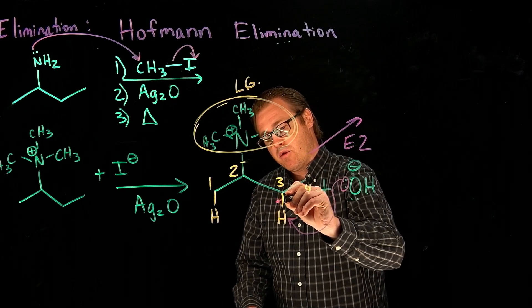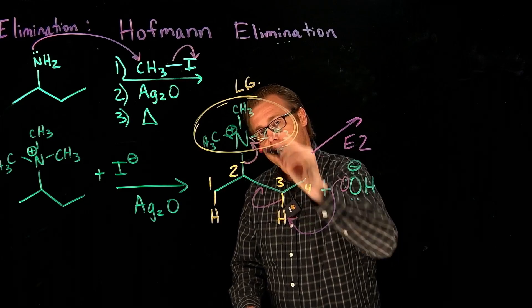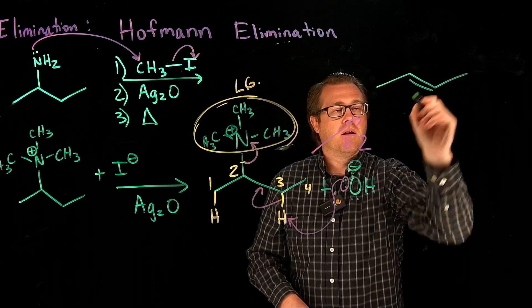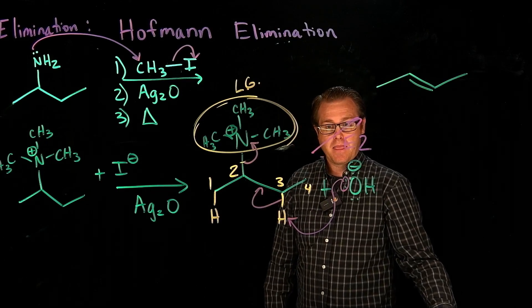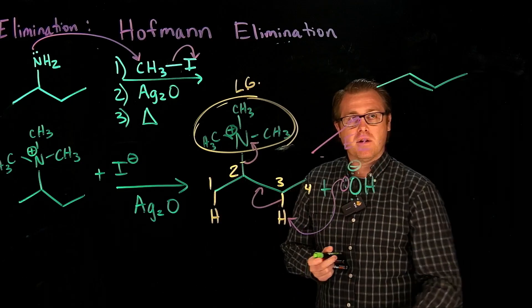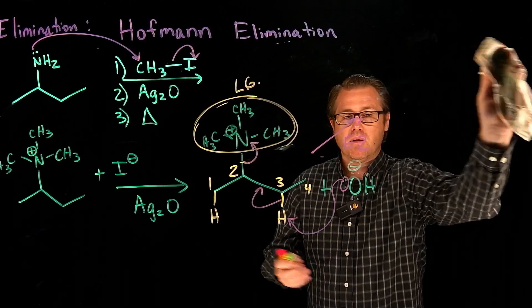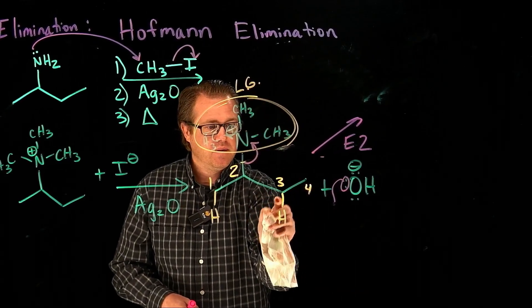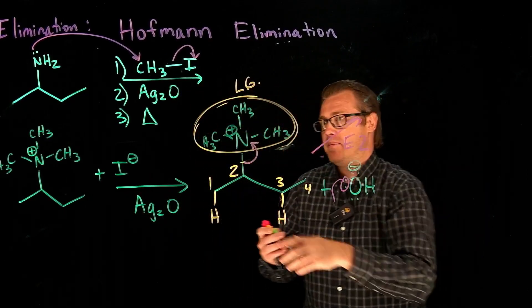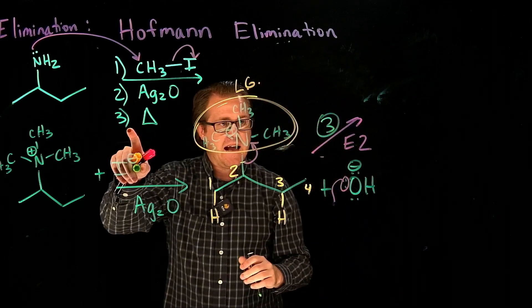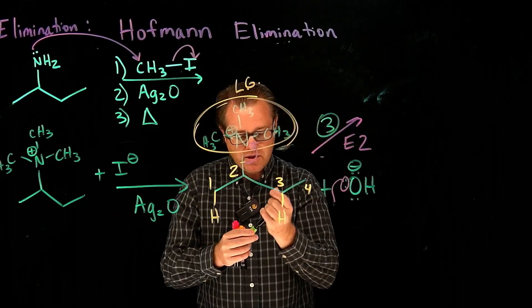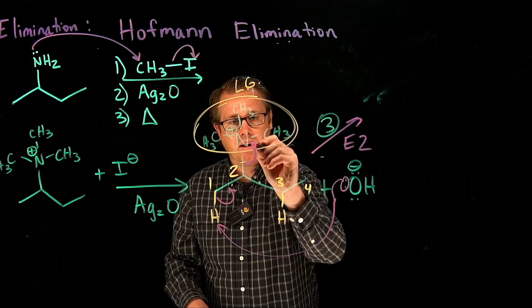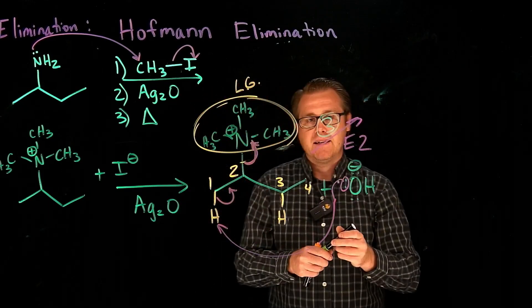If the hydroxide comes and uses its lone pair to grab this proton, what would our product be? It would have formed the Zaitsev's product. But that's not how the Hoffman reaction works. It makes the Hoffman product or the anti-Zaitsev's product. This base is going to come and abstract the proton on carbon 1 and eliminate, and that will give us our anti-Zaitsev product.